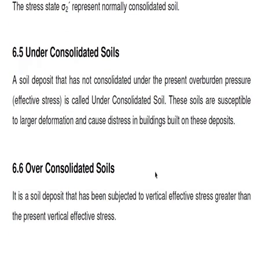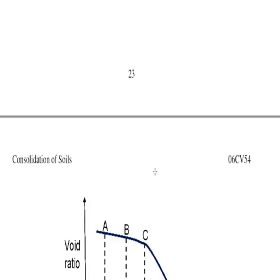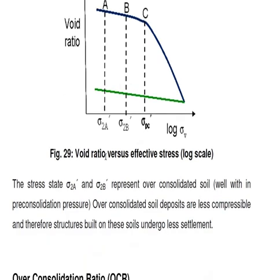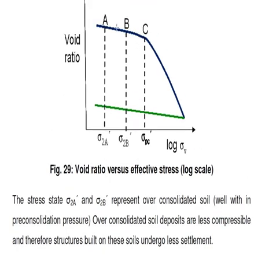An Over Consolidated Soil has been subjected to a vertical effective stress greater than the present vertical effective stress. On the graph, if you apply stress states Sigma 2A or Sigma 2B — which are less than point C, the pre-consolidation pressure — the soil is overconsolidated. It was already overconsolidated in the past.